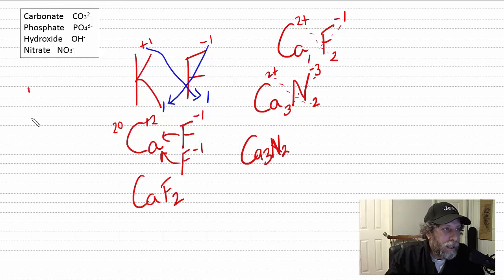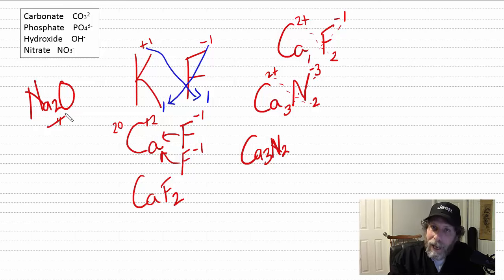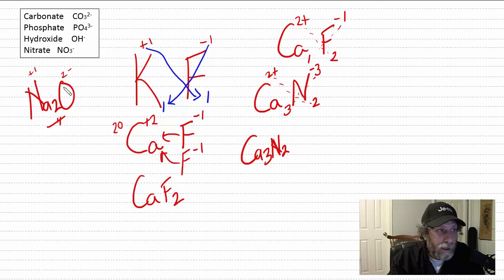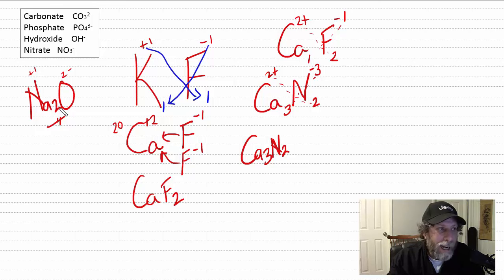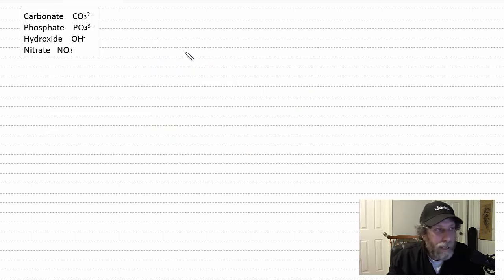For sodium oxide, Na₂O: sodium is plus one, oxygen is two minus. You need two sodiums — two plus and two minus zeros out. The formula is Na₂O, not Na₃O. That's how you write formulas for simple ionic compounds.